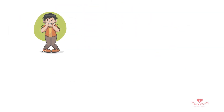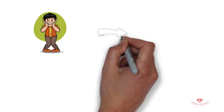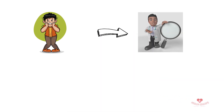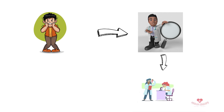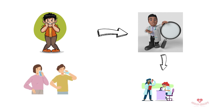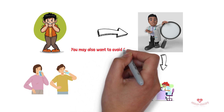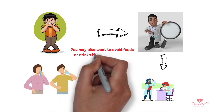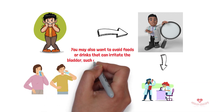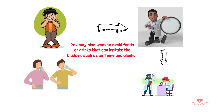If you are experiencing persistent bubbles in your urine, it is important to consult with a medical professional. They may perform tests to determine the underlying cause and recommend appropriate treatment. In the meantime, it is important to stay hydrated by drinking plenty of water and other fluids. You may also want to avoid foods or drinks that can irritate the bladder, such as caffeine and alcohol.